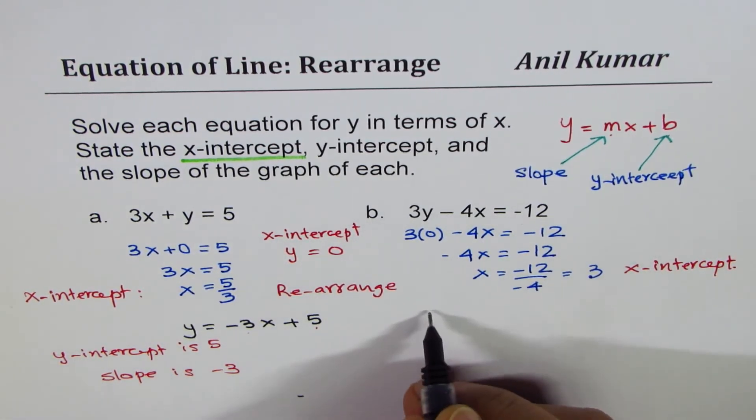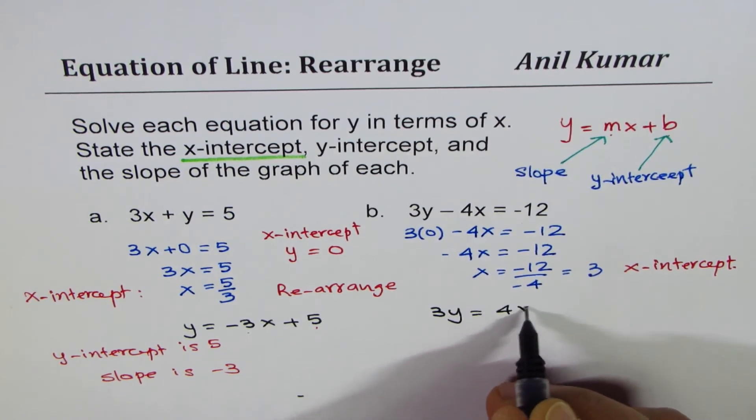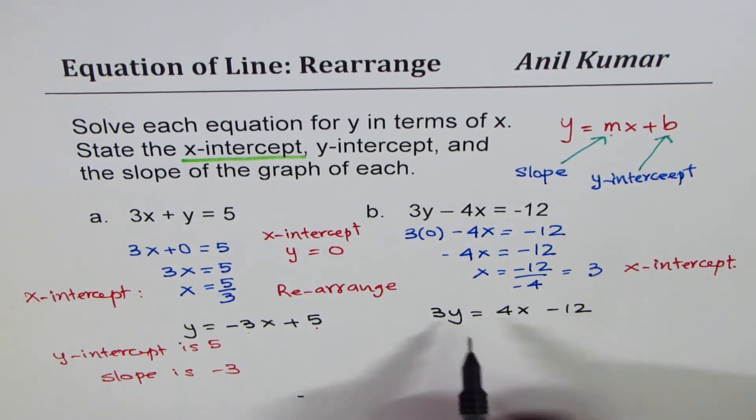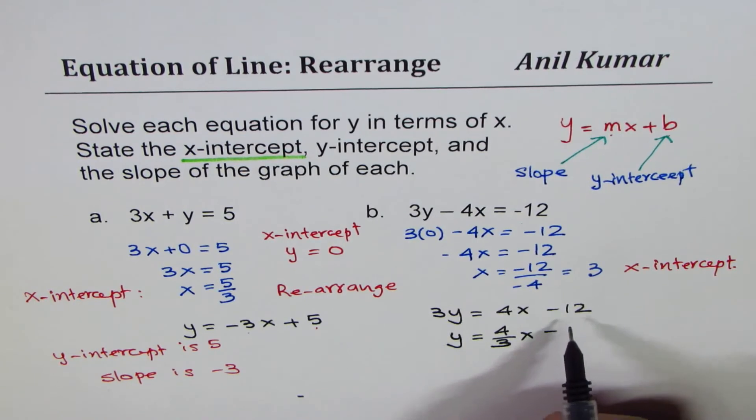So let's do the same for the second equation. We have 3y equals to 4x minus 12. We can divide each term by 3. So y equals to 4 over 3x minus 4.